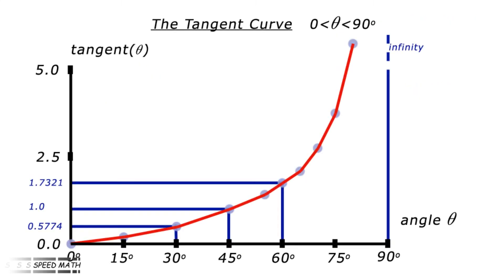Here is a graph showing how tan theta varies against the angle theta in degrees. For very small angles, this ratio tends towards zero. For angles approaching 90 degrees, the ratio tends towards infinity, and the curve is one of increasing gradient.